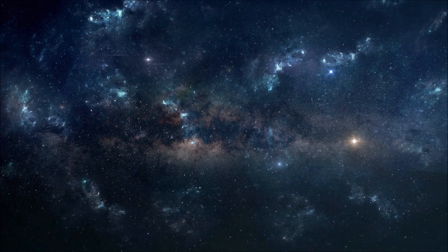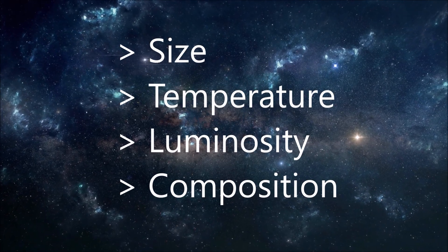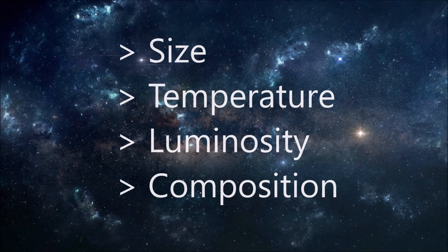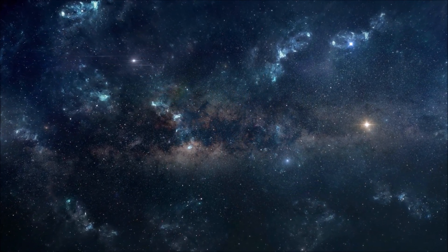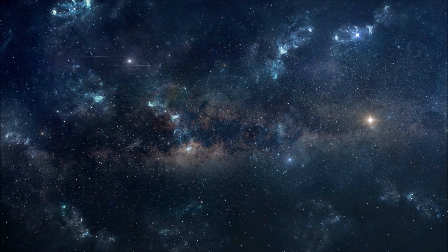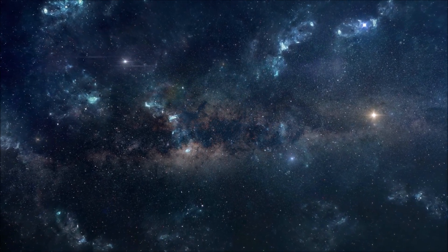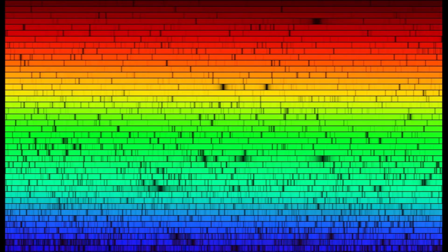There are several ways to categorize stars, including size, temperature, luminosity, and composition. The most widely used system is the spectral classification system, which categorizes stars based on the absorption and emission lines in their spectra. These lines can be used to determine the temperature, mass, and composition of a star.